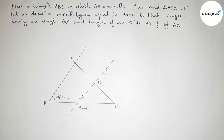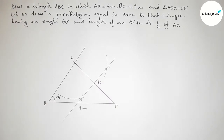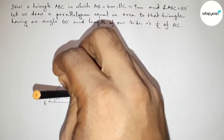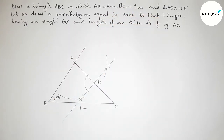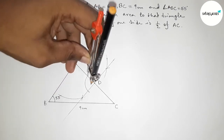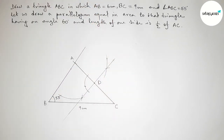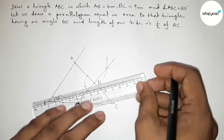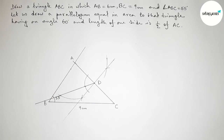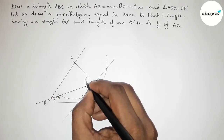Next, we draw a 60 degree angle at point D. Putting the compass on point D and taking any length, we draw an arc. With the same length, we step off the arc to mark the 60 degree position, cutting arcs as needed. Joining this line gives us the 60 degree angle at D.